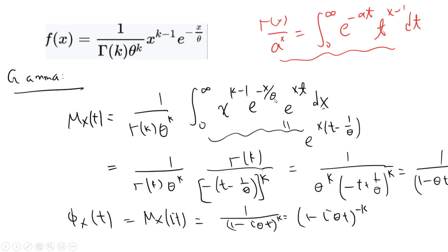So a equals 1/theta minus t, which gives negative 1 over (t minus theta) to the power k. The gamma(k) terms cancel, and combining everything you get (1 minus theta*t)^(-k) as the moment generating function.